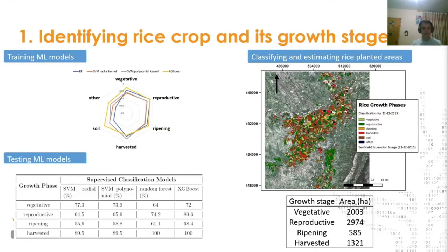The first example is about rice growth stage identification for a Colombian region called Saldaña, in the central region of the country. After Fedearroz collected the data, we downloaded and processed satellite images for two years, 2015 and 2016. We used three machine learning approaches: random forest, support vector machine, and gradient boosting machine. We split the database into three groups — one for training, one for validation, and one for testing. After completing the training and testing process, we found that gradient boosting machine had the best performance using F1 score as a reference. Once we reached some confidence with our model, we classified the whole region to know what the rice crop stages were during December 21, 2015.